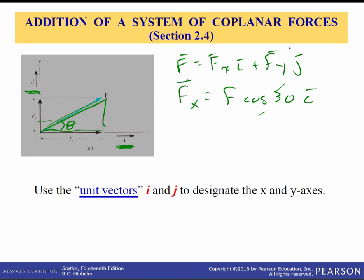These scalar components — f times cosine of theta in i, and f times sine of 30 in j — are scalars, not vectors themselves. So we've broken up vector f using the triangle rules of cosine theta and sine theta. Now we can take any vector — it could be a three-dimensional vector as well. We're working in 2D here, but we'll also work in 3D and break vectors into x, y, and z components later in the course.